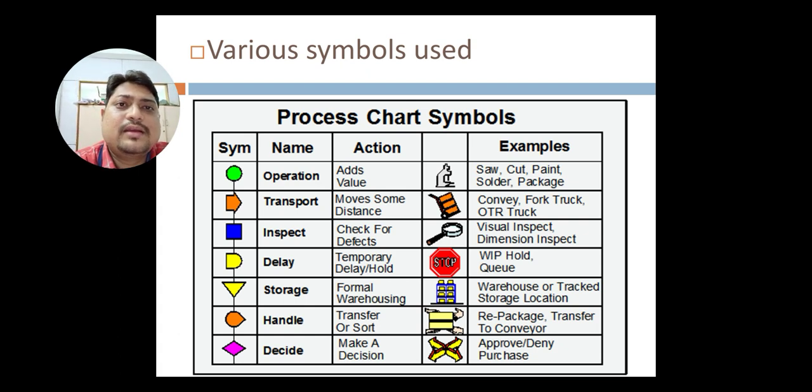Then when transportation is done by using some conveyor, fork truck, OTR truck, crane, that transportation symbol is arrow.